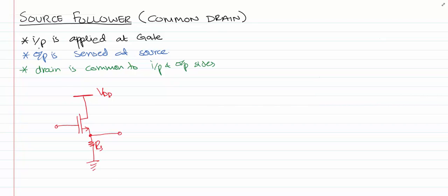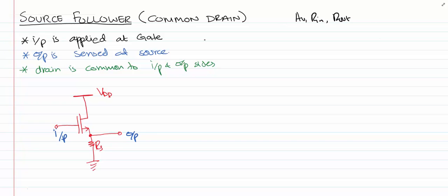Hello everyone and welcome to this tutorial on source follower. The source follower configuration of MOSFET is also known as the common drain configuration. Here we can see that the input is applied onto the gate side and the output is sensed on the source side. The VDD is connected to the drain. In this tutorial we'll be trying to find the voltage gain, the input impedance, and the output impedance of this source follower configuration.